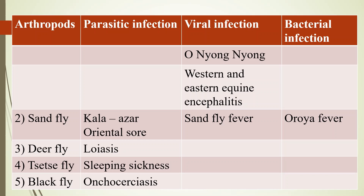Third, deer fly — which causes the parasitic infection loiasis, caused by Loa loa. The deer fly is the transmitting agent.